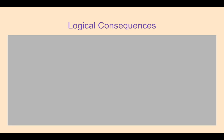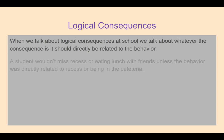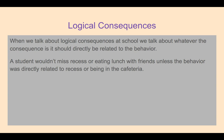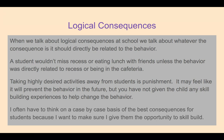We also talk about logical consequences, because kids are going to make mistakes. Consequences should be directly related to the behavior — a student wouldn't miss recess or eating lunch with friends unless the behavior was directly related to recess or the cafeteria. Taking highly desired activities away from students isn't a logical consequence, it's punishment. What we find is that it doesn't really prevent the behavior long-term because you're not building any skill for the child to not repeat the behavior. The reason they made a mistake is because they're lacking the skill to make the correct choice, so we need to build opportunities for them to skill build.